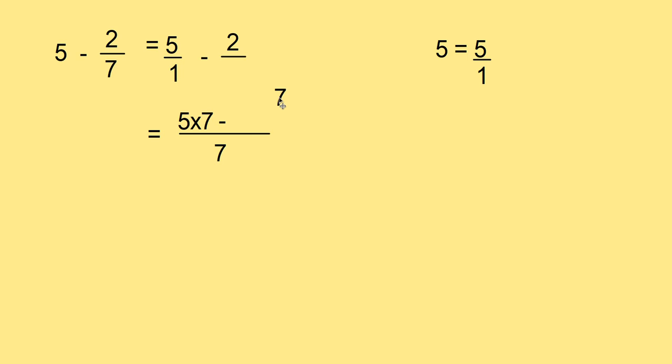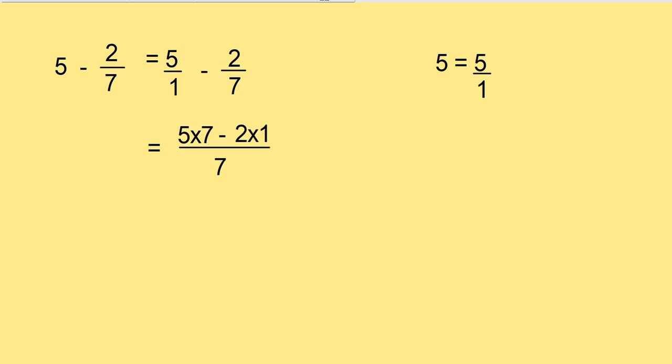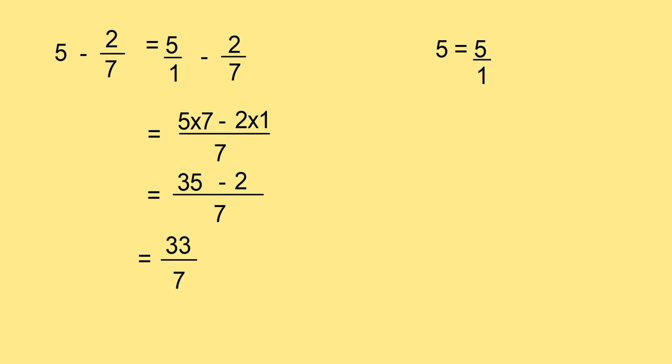Now 7, 7 one times. 7 ones are 7. So the numerator is to multiply 1 with 2. That is 5 into 7 minus 2 into 1 by 7. And simplifying, you get 35 minus 2 by 7. And the answer is 33 by 7.